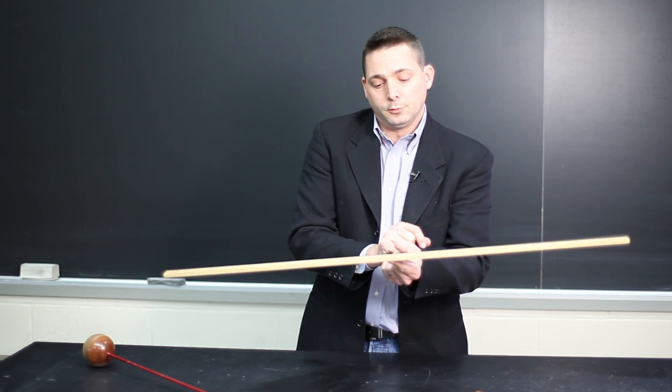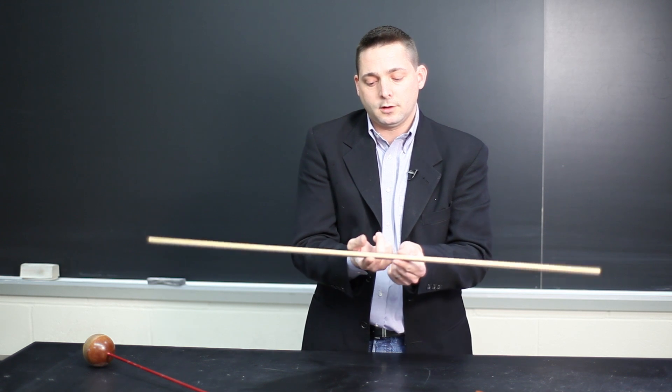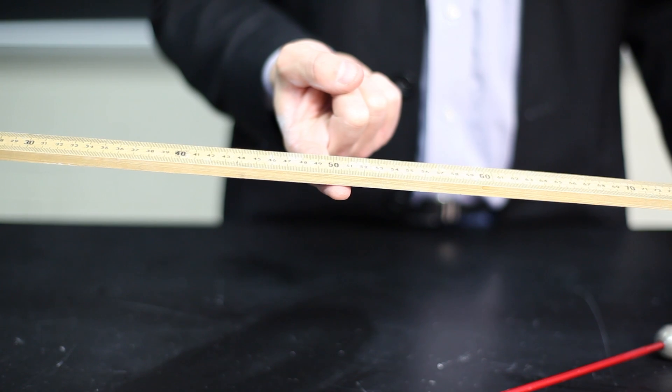So if I hold the ruler stick at the 50 centimeter mark, it balances relatively simply.